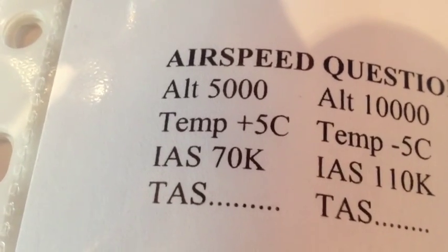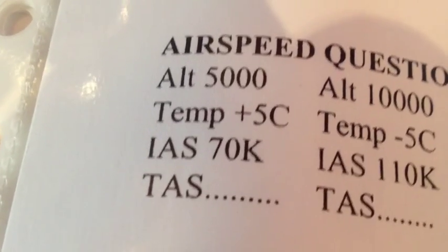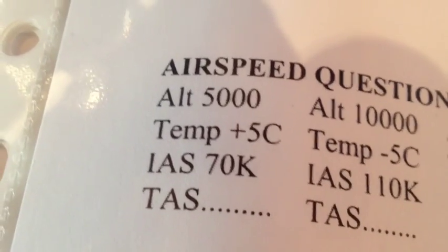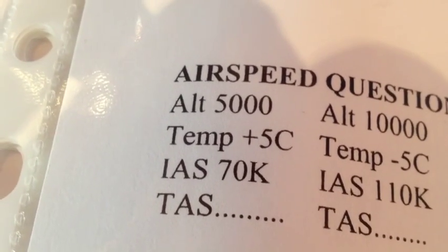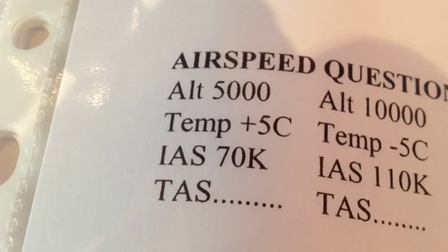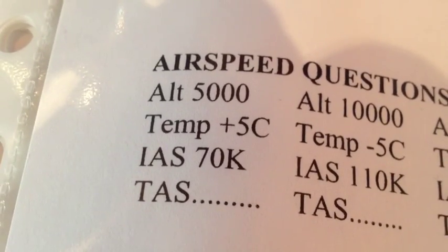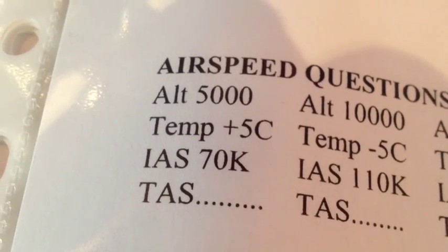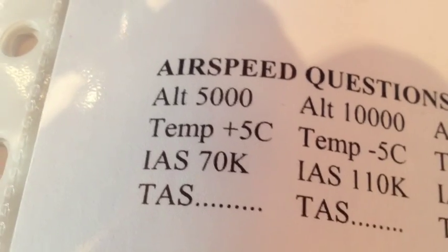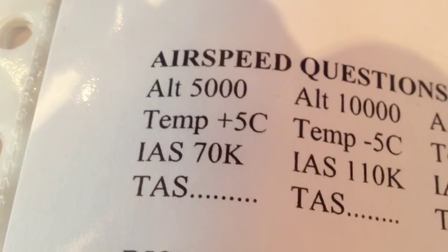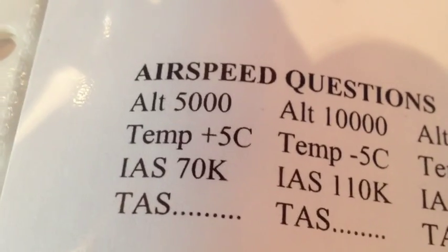The first airspeed question is: given a pressure altitude — meaning your altimeter is set in the Kollsman window to 29.92 — a temperature of plus 5 Celsius, and an indicated airspeed of 70 knots, what is your true airspeed?